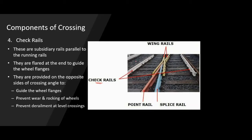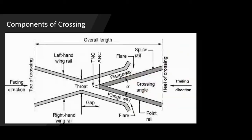In short, the crossing part of a turnout contains four main components: the actual V-piece made up of point rail and splice rail or two point rails; two wing rails; and a check rail. The wing rails together with the V-component — point rail and splice rail — all together provide the gap for the flange of the wheel to cross. Other components are accessories such as slide chairs and packings below the chairs.